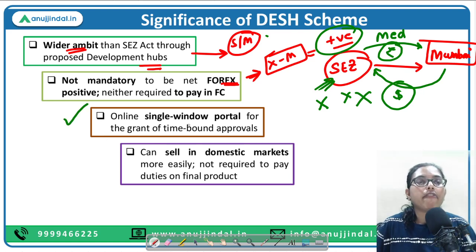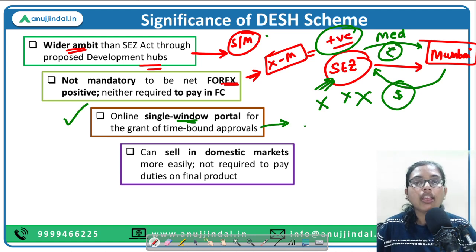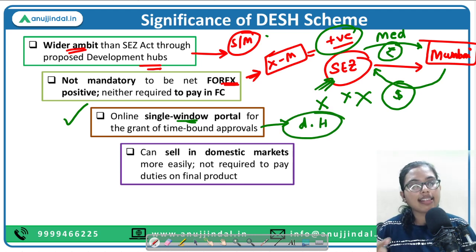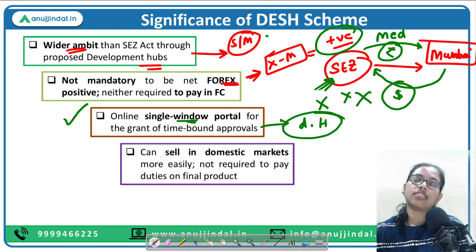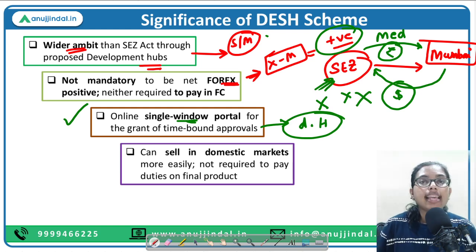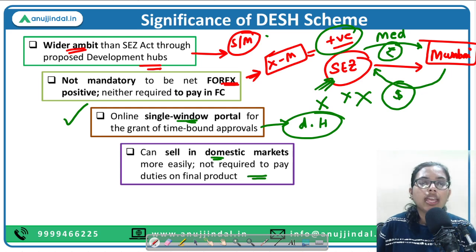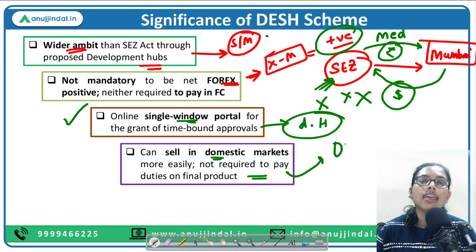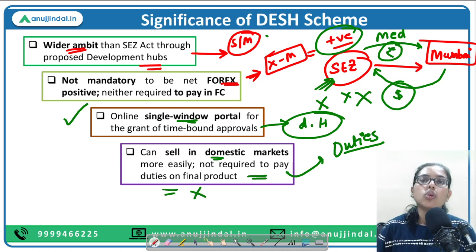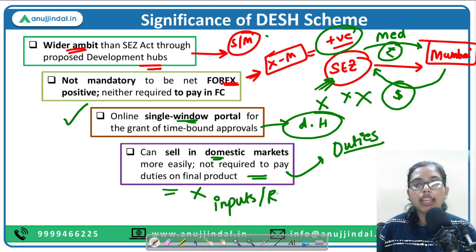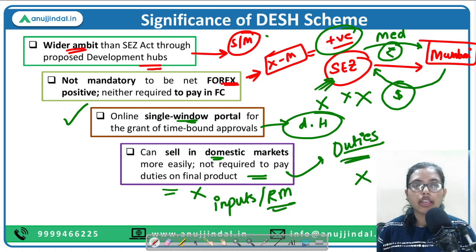The DESH Bill also proposes an online single window portal for the grant of time-bound approvals for registration and establishment of any development hub. Earlier there were many central-level approvals required; now there will be one single window portal from which you can easily obtain approval. Additionally, you can now sell products in domestic markets more easily, demand payment in rupees, and you are not required to pay duties on final products — only on imported inputs and raw materials.